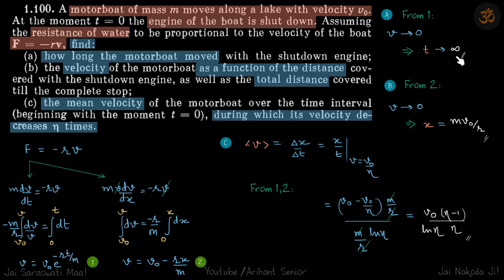And in part b, the velocity as a function of distance, so that we already figured out. And then total distance covered, so at final events when it stops, then v becomes zero.